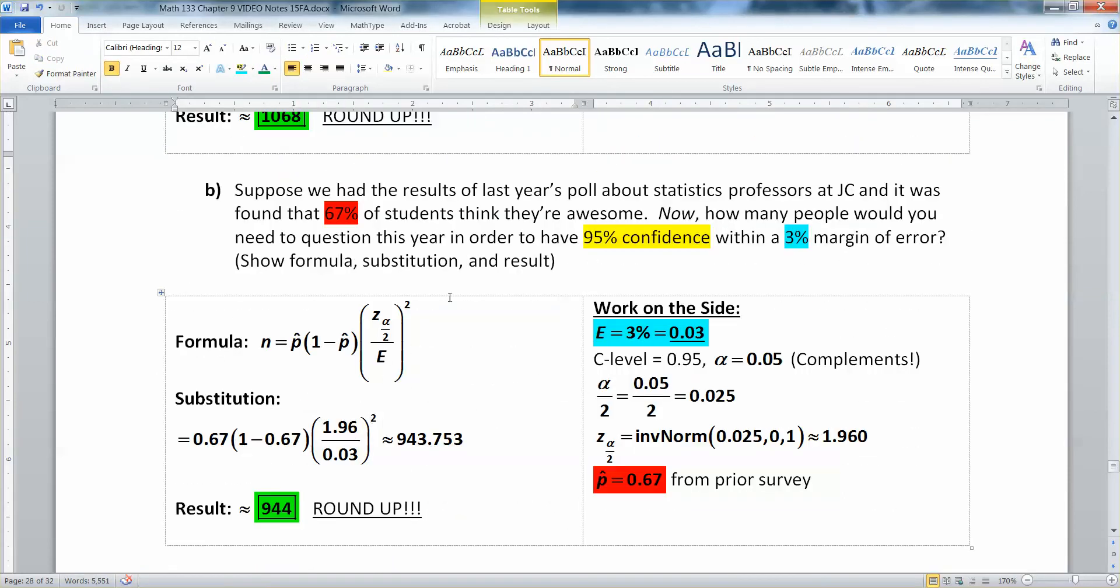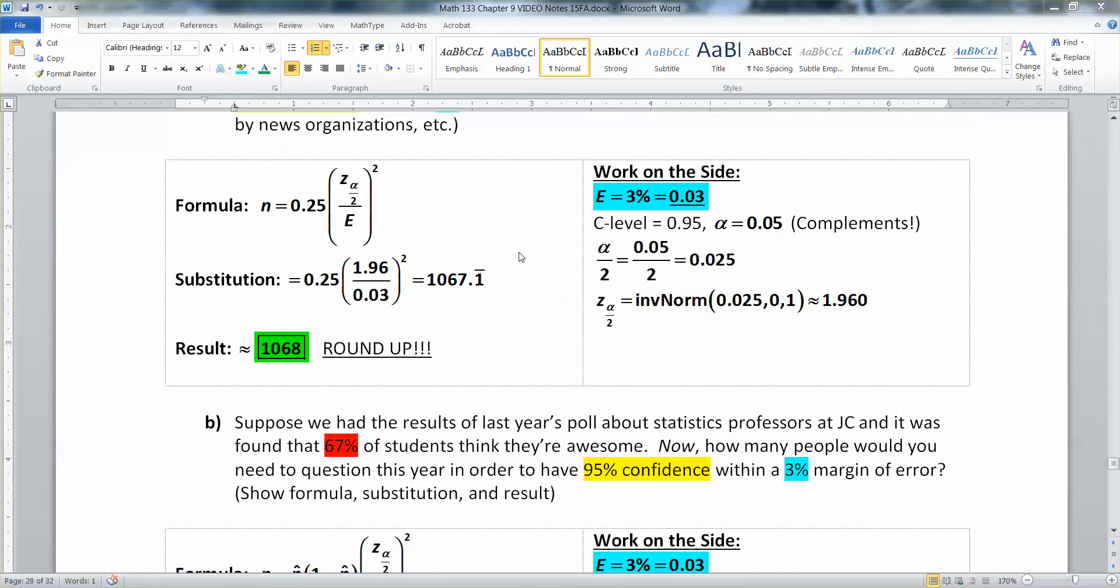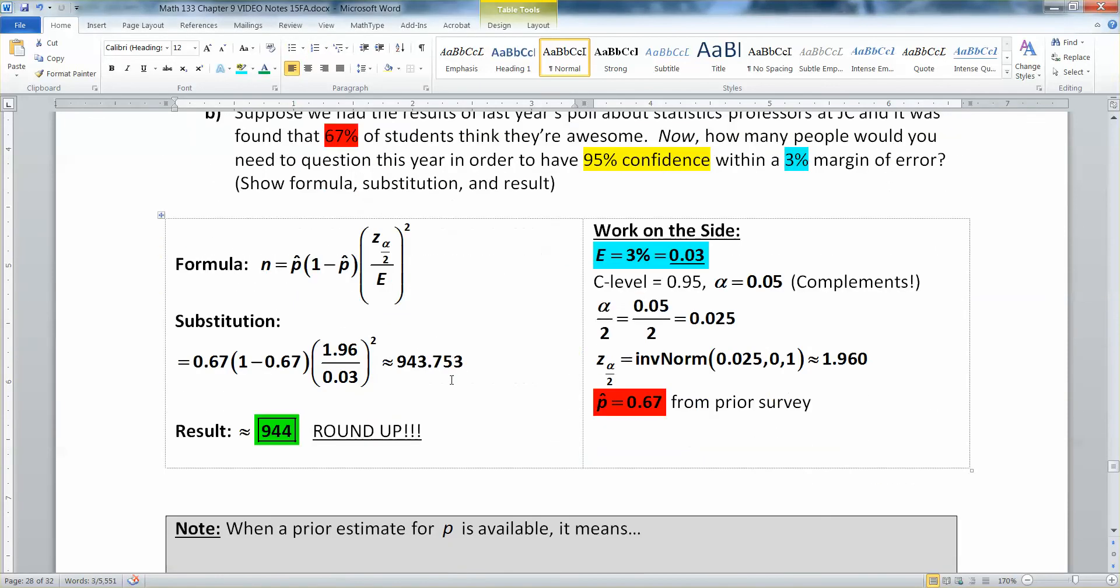But having this prior estimate, having this red part right here, 0.67, that makes it so that we don't need as many. We don't need as large a sample as we do when we have no prior estimate. Because when you have no clue, it's like throwing darts in the dark. You have no idea where you're going to go. So you need a larger sample to get a hold of what's happening. But if you have some prior estimate, you can get away with a smaller sample, because you at least have a clue that's on the left or the right of the board, if that makes sense.